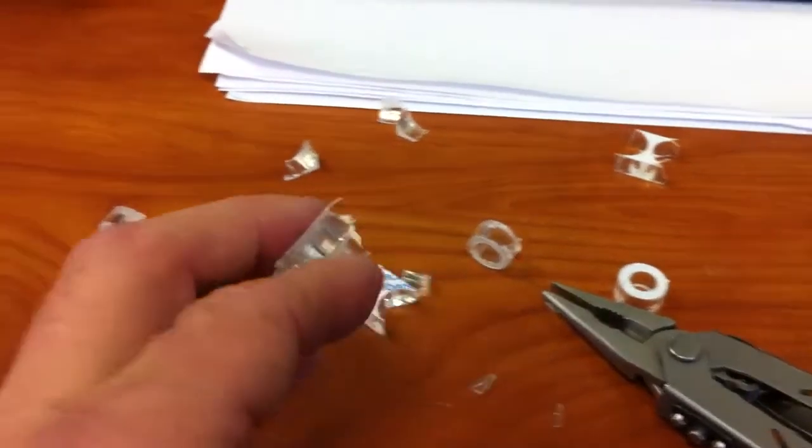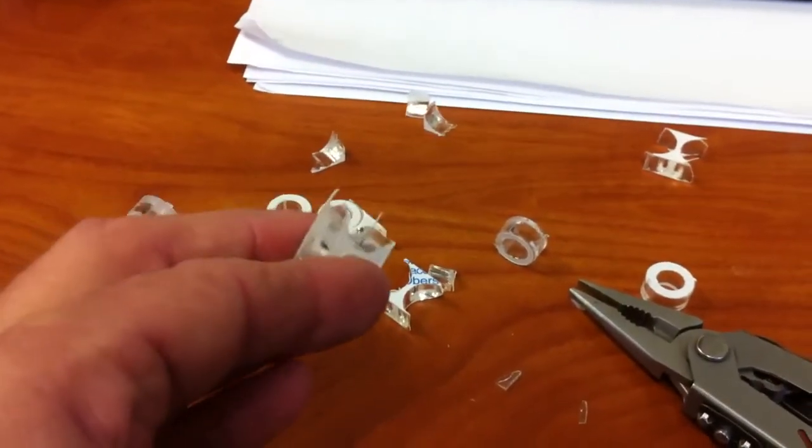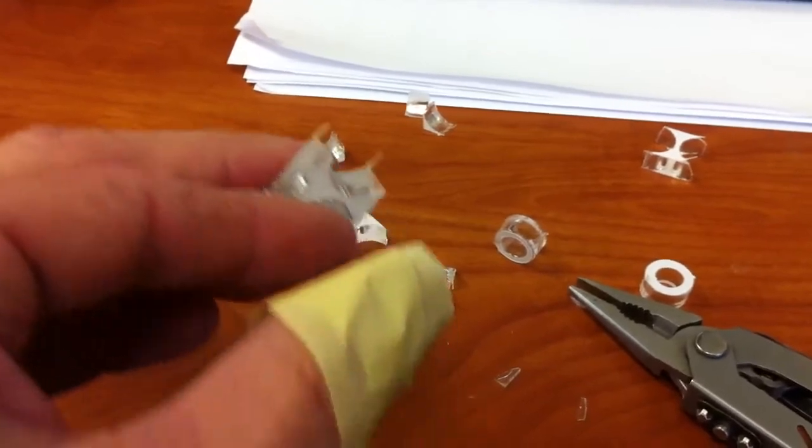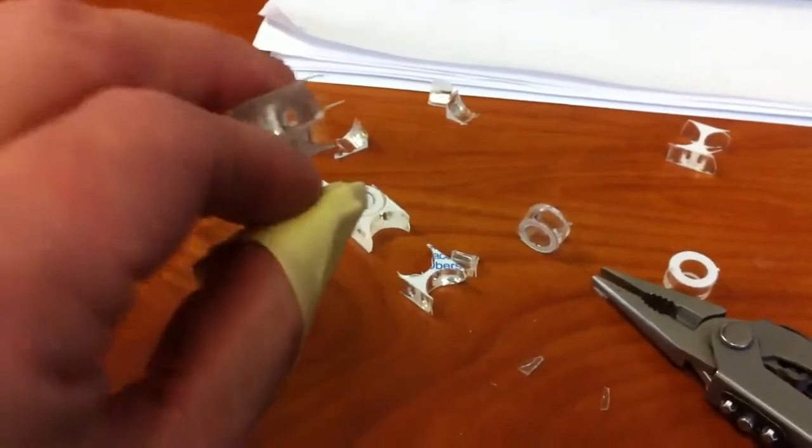Anyways, when I'm breaking it apart with the pliers and bracing it between my fingers, it actually slipped and gouged right across my finger like a little knife.